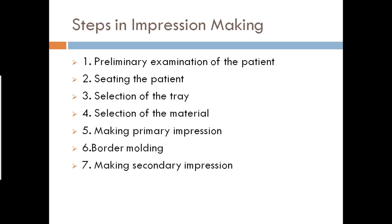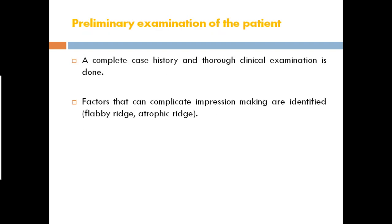Steps in impression making: first, preliminary examination of the patient. When the patient comes, take a proper case history and perform thorough clinical examination including extraoral examination, then intraoral examination of the mucosa, ridges, frenum attachments, palate, tongue type, and consistency of saliva. Make a note, compare findings, make a diagnosis, and plan treatment. Once case history and examination are done, verify if proper impression can be made. Any condition that complicates impression making must be identified — such as flabby or atrophic ridges, or sharp bony spicules. In such cases, alter your impression technique or postpone treatment until the mucosa returns to a normal state.